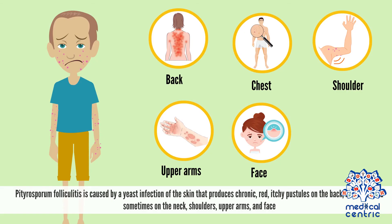Pterosporum folliculitis is caused by a yeast infection of the skin that produces chronic, red, itchy pustules on the back and chest, and sometimes on the neck, shoulders, upper arms, and face.